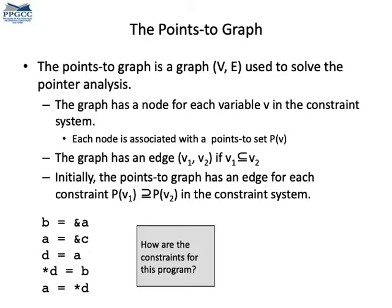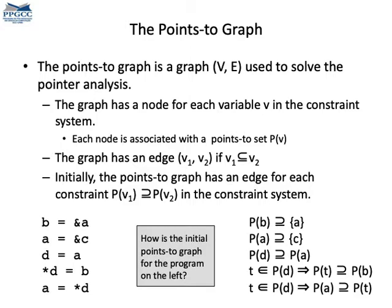We will build a graph. Each vertex of this graph will correspond to a pointer in the program. Whenever we have a constraint saying that v1 is included in v2, then we have an edge from v1 to v2. Let's build this graph for this program on the bottom of the figure. On the right side, we have the constraints that we extract from this program. We have five instructions, thus we have five constraints.